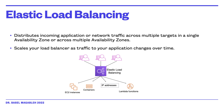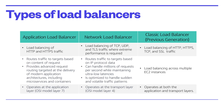Elastic Load Balancing is available in three types. An application load balancer operates at the application level. It routes traffic to targets — Amazon EC2 instances, containers, IP addresses, or Lambda functions — based on the content of the request. It is ideal for advanced load balancing of HTTP and secure HTTPS. An application load balancer provides advanced request routing targeted at delivery of modern application architectures, including microservices and container-based applications.